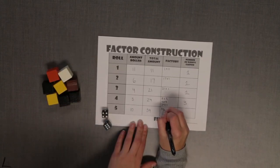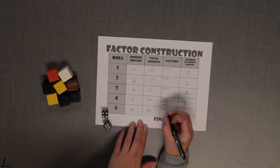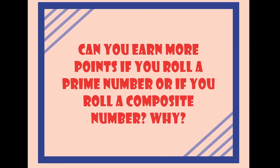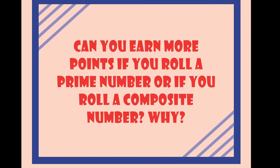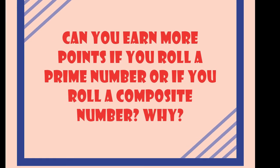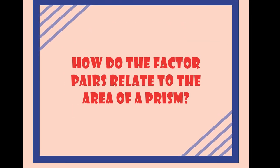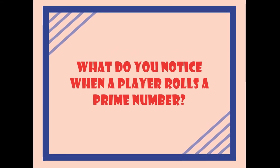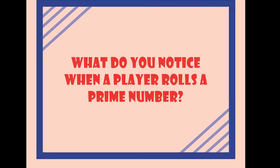The player with the most points after everyone has rolled five times wins the game. Some questions to think about are: can you earn more points if you roll a prime number or if you roll a composite number? Why? How do the factor pairs relate to the area of a prism? What do you notice when a player rolls a prime number?